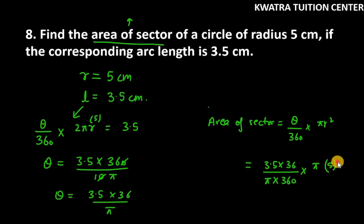And we have again pi R square. R square is 5 square. So pi from pi will cancel. 36 from 360 will cancel, so you are left with 10 at the bottom. And you have 3.5, we have 10, we have 25. 25 and 10 cancel.